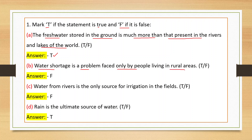Second statement: water shortage is a problem faced only by people living in rural areas. Urban areas mein bhi people unko bhi water shortage problem hoti hai — so this is a false statement, answer is F.